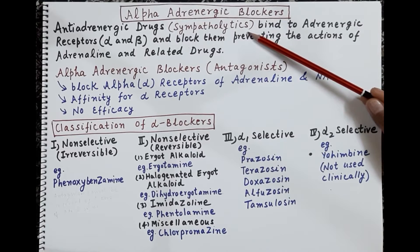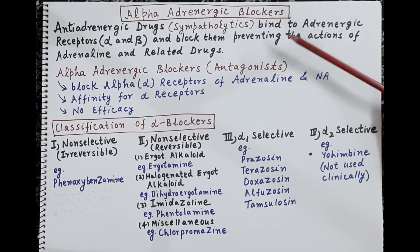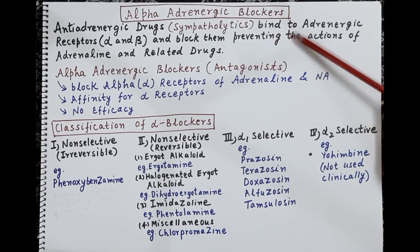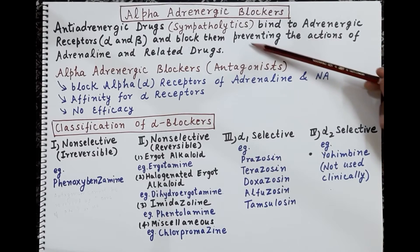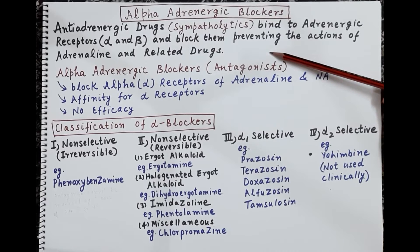Sympatholytics are of two types: either they are alpha blockers or they are beta blockers. That means either they block the alpha receptors or they block the beta receptors. So anti-adrenergic drugs or sympatholytics bind to adrenergic receptors — that is, alpha and beta receptors — and block them, preventing the action of adrenaline and related drugs.